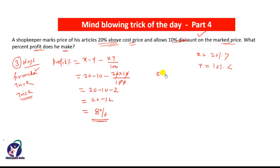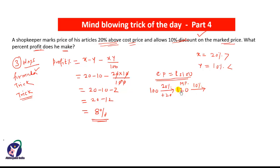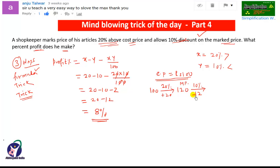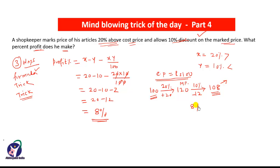First, assume that the actual cost price is ₹100. The seller increased it by 20%, so 20% of 100 is 20, making the marked price ₹120. Then he gives a 10% discount on ₹120, which is ₹12. So 120 − 12 = ₹108. Initially the cost was ₹100 and he sold it for ₹108, meaning he earned ₹8 on ₹100 — a profit of 8%.